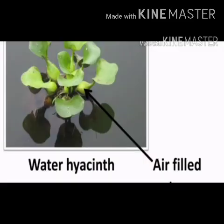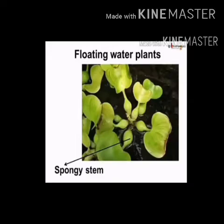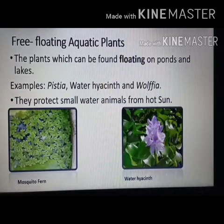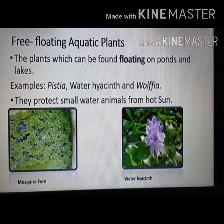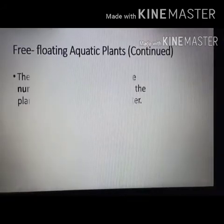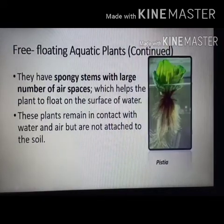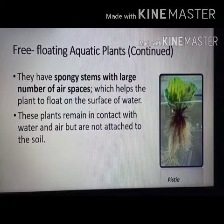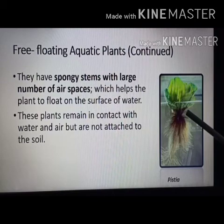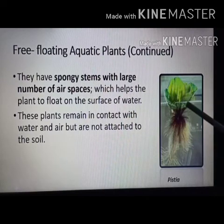You can see pictures of these plants — mosquito fern and water hyacinth. They have spongy stems with a large number of air spaces, which help the plant float on the surface of water. These plants remain in contact with water and air but are not attached to the soil. They are freely floating, and you can see only the leaves or the upper part of the plant.